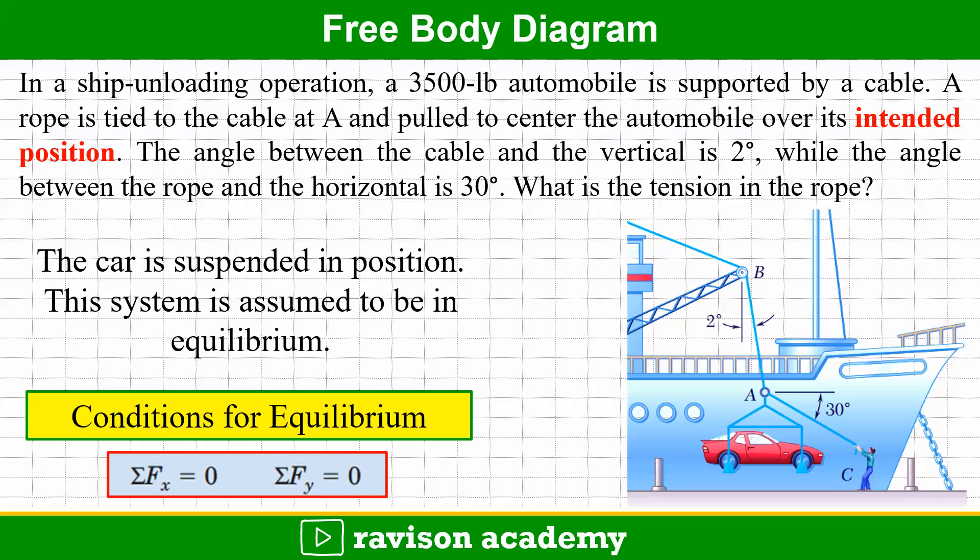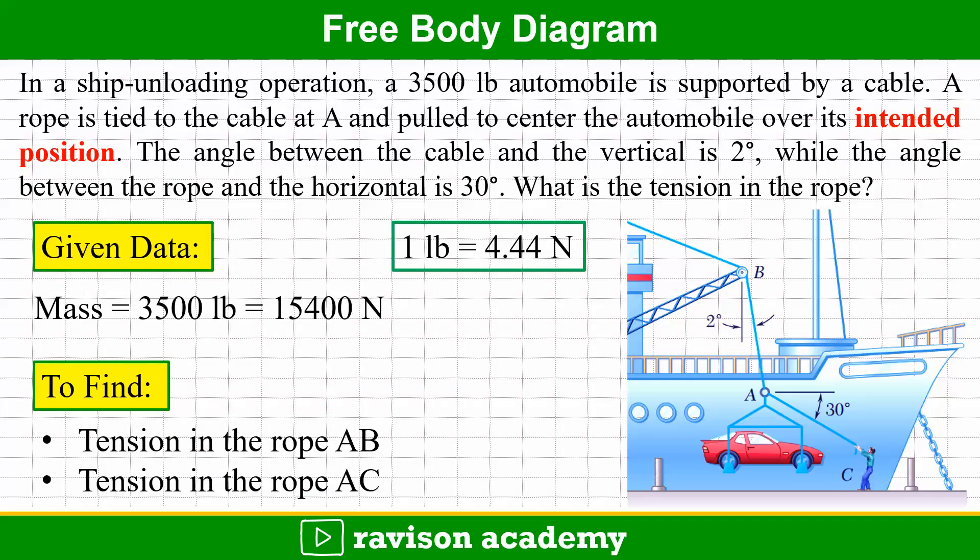The car is in a suspended position, so the system is assumed to be in equilibrium. The conditions for equilibrium are: summation of Fx equals zero and summation of Fy equals zero. The mass of the object is 3500 pounds, which is converted to Newtons — one pound equals 4.44 Newtons — giving 15400 Newtons.